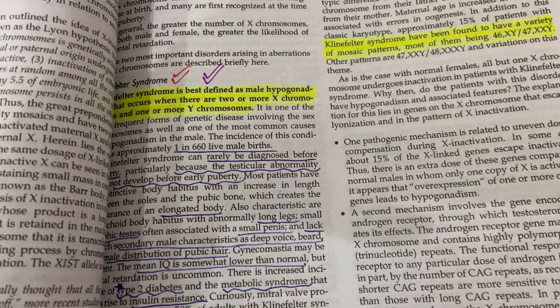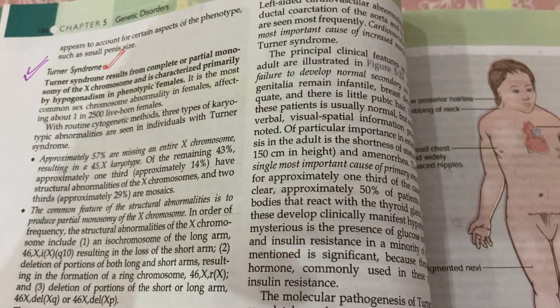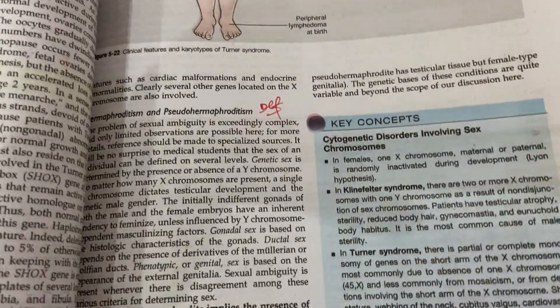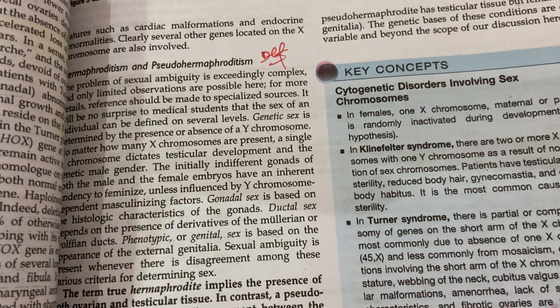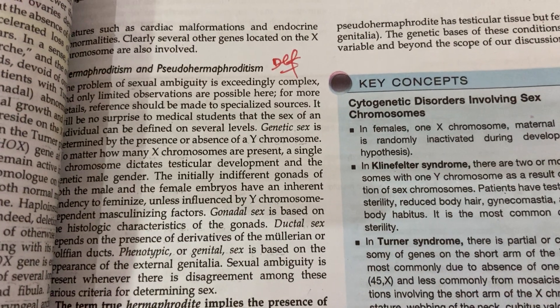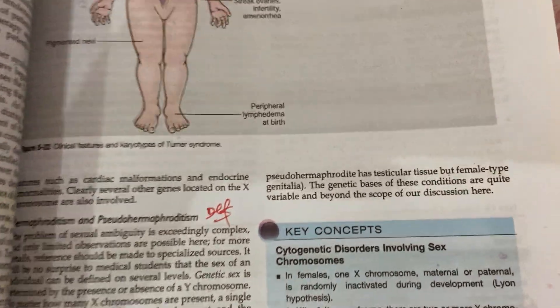Klinefelter syndrome is important from the MCQ point of view. Turner syndrome is also important from both the SQ and MCQ point of view. We should know about the definitions of hermaphroditism and pseudohermaphroditism, but there is no need to go into full detail — you can skip the rest of this section.